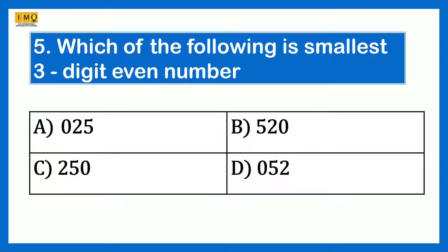Which of the following is the smallest 3-digit even number? Option A 025, Option B 520, Option C 250, Option D 052. Option C is the smallest 3-digit even number. A and D are 2-digit numbers. Option B is greater than Option C. Therefore, the smallest 3-digit even number is 250.